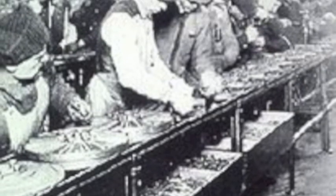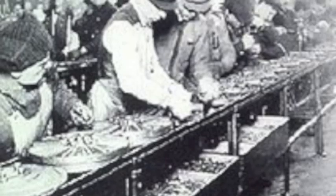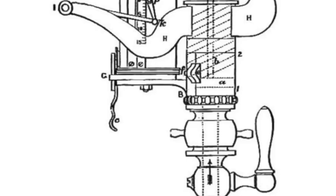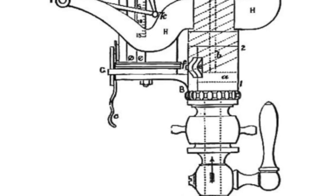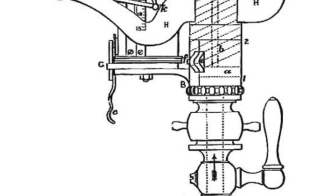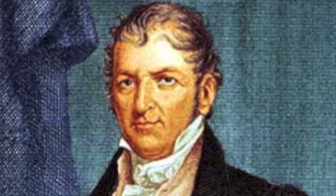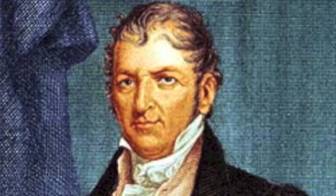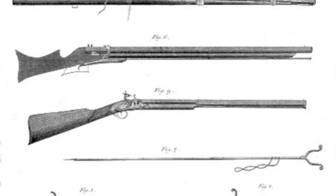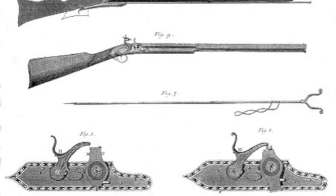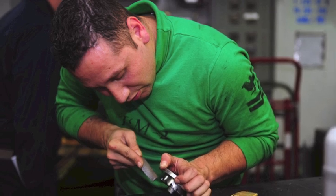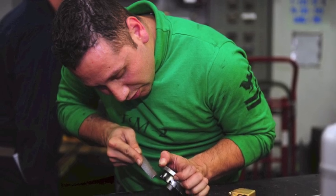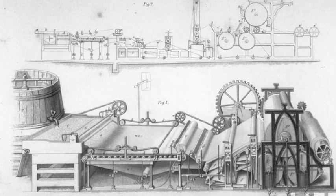Although steam engines were large and important in the creation of new machines, the system of interchangeable parts also caused great change. Interchangeable parts were perfected by Eli Whitney in the early 1800s. Before interchangeable parts, machines and machine parts were made custom, so if one of these custom machines had issues, it was sent to an expert for repair, which proved to be very expensive.